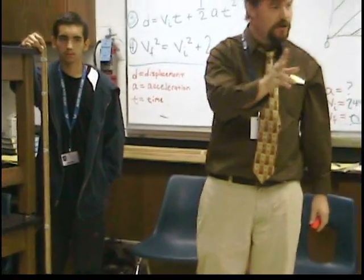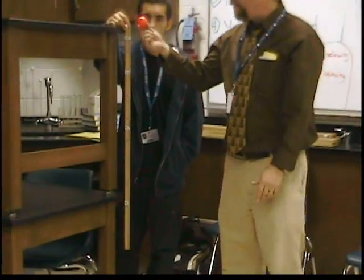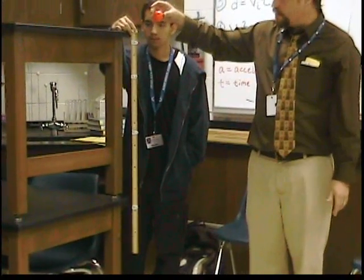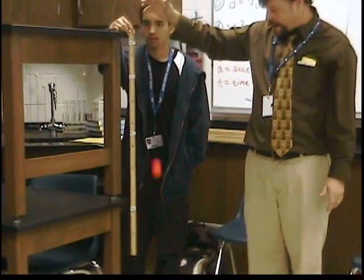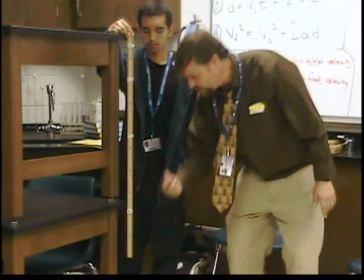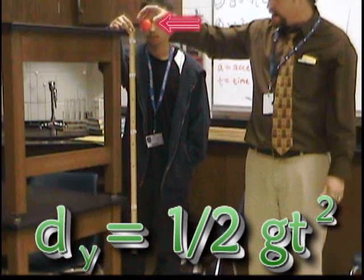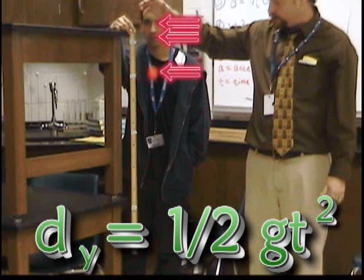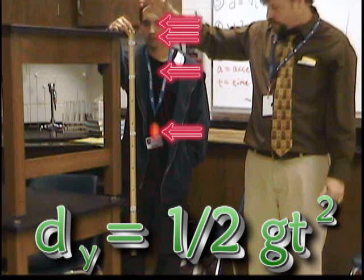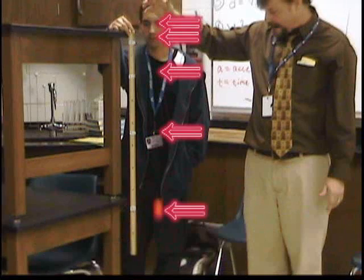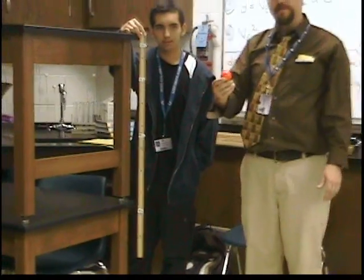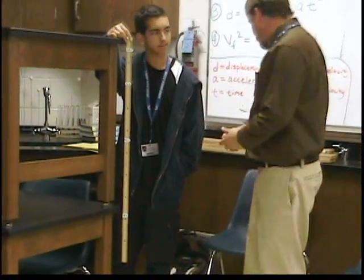Alright, so remember, we have two frames of reference that we're talking about. We just talked about an object in free fall. So remember with the golf ball — I had it sitting here and I dropped it and it went straight down. And at the same time, we have a horizontal component. We have a ball rolling across horizontally.